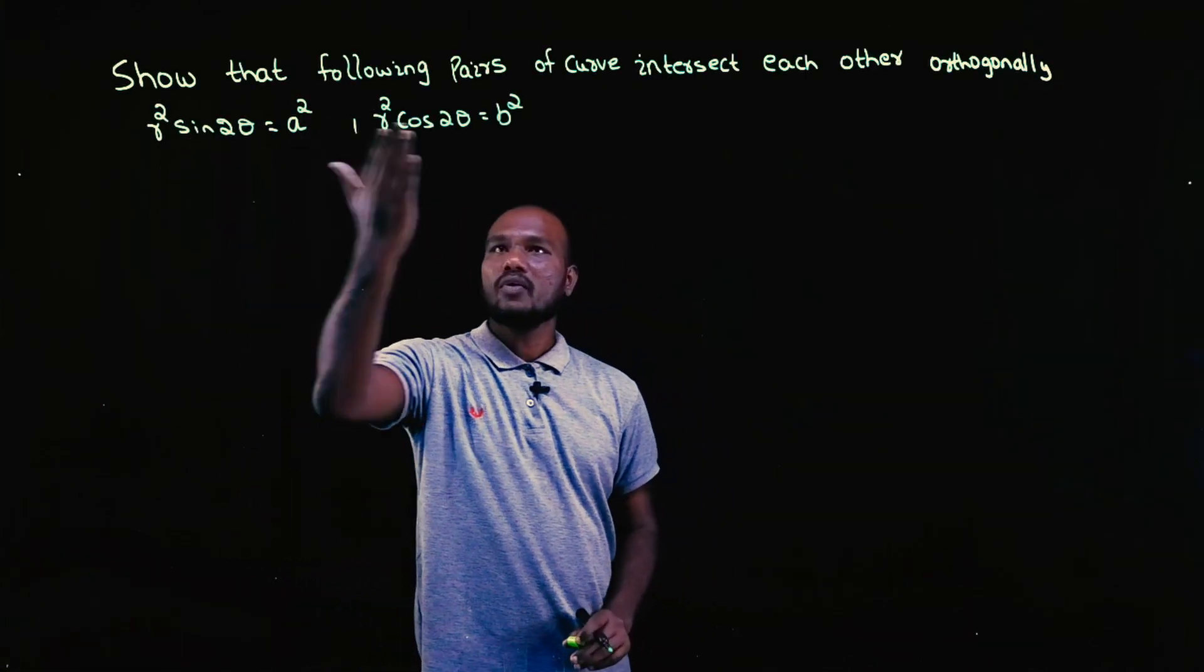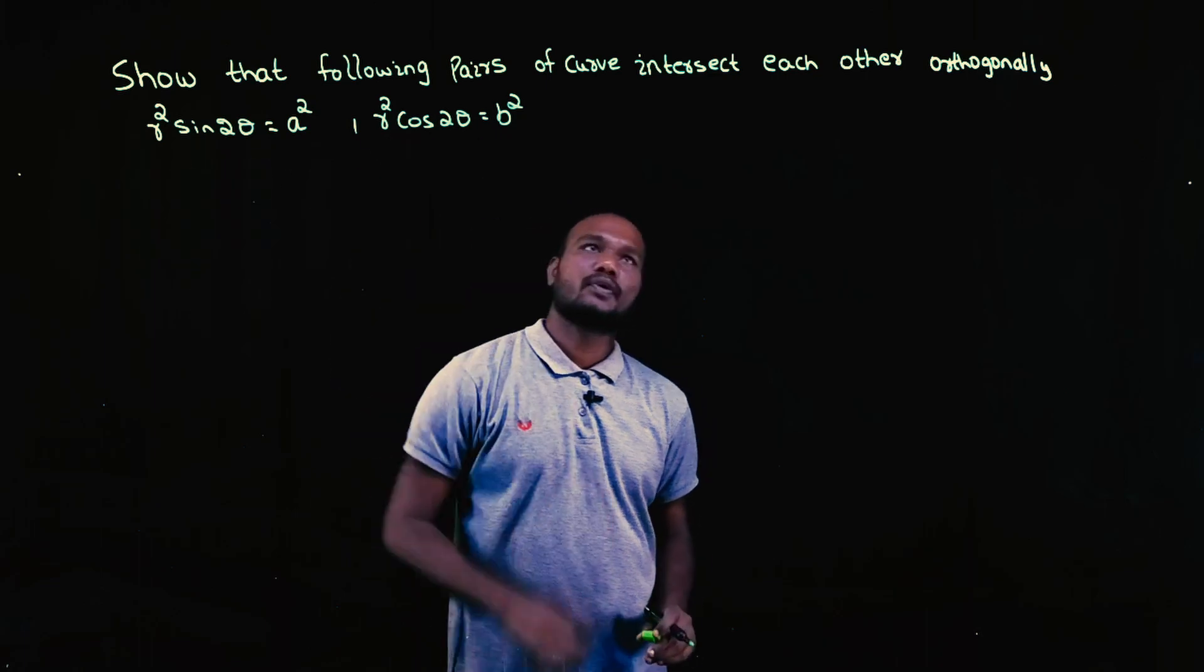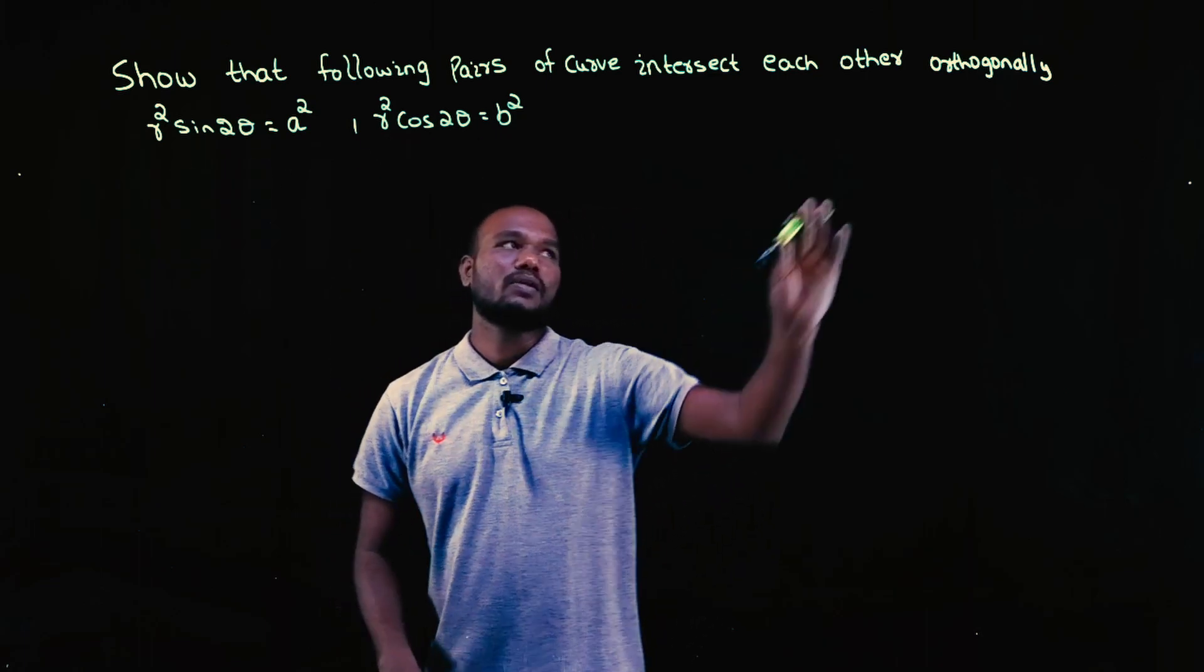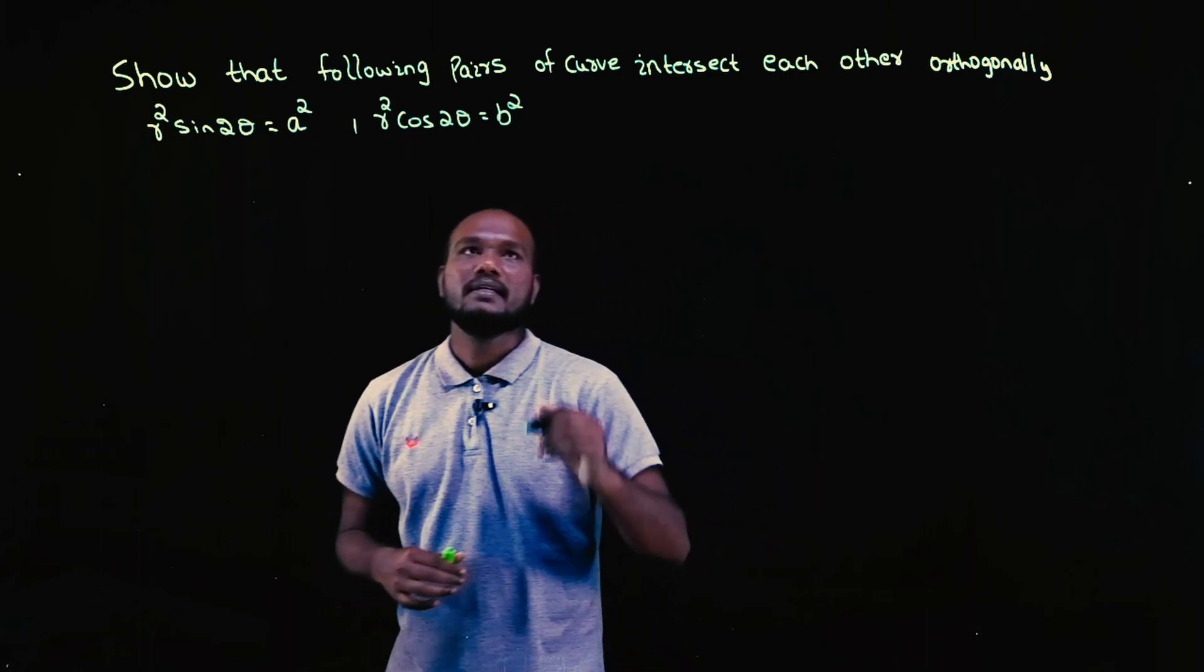Okay, what is given in the question? You have to show that the pair of polar curves intersect each other orthogonally. They intersect each other orthogonally. What that means?